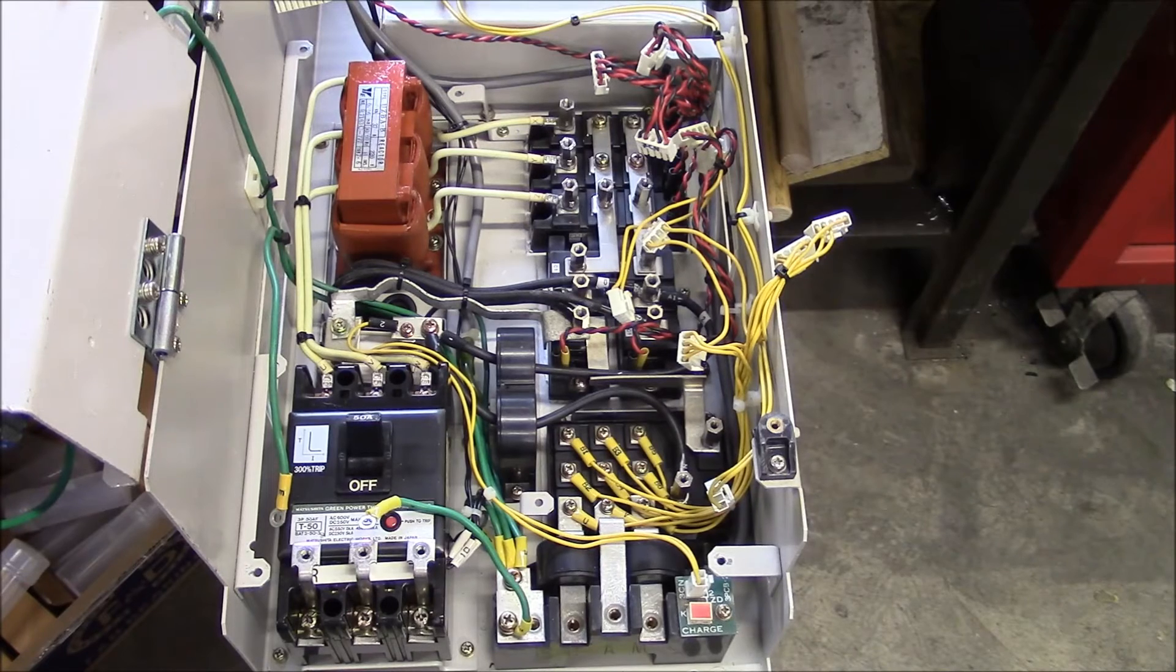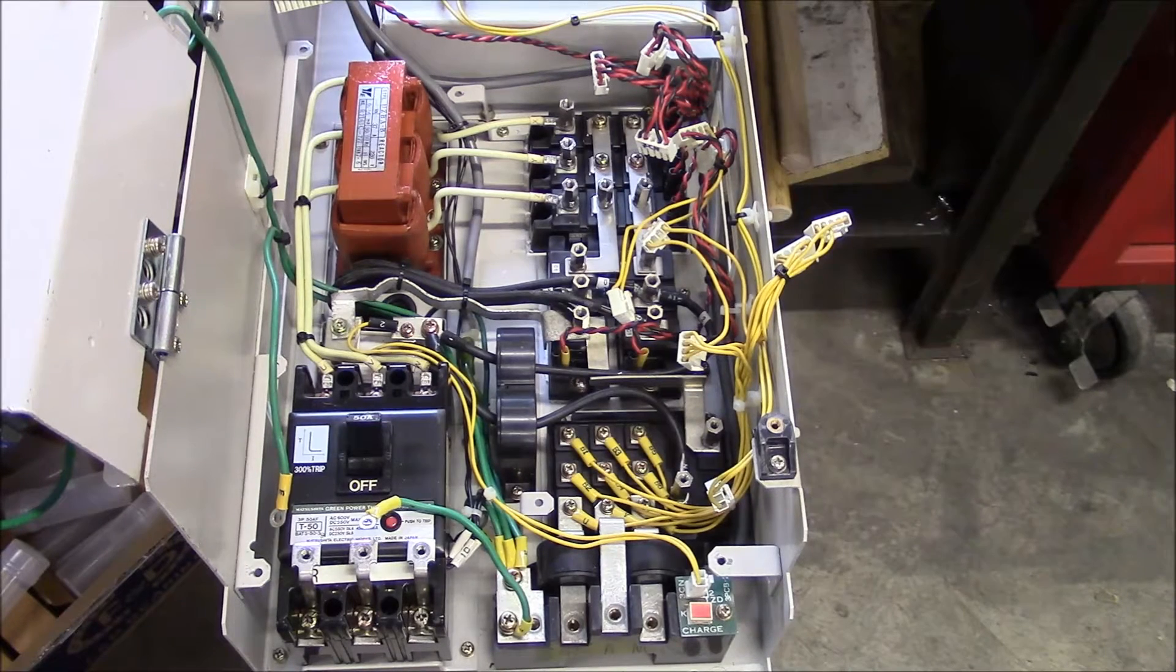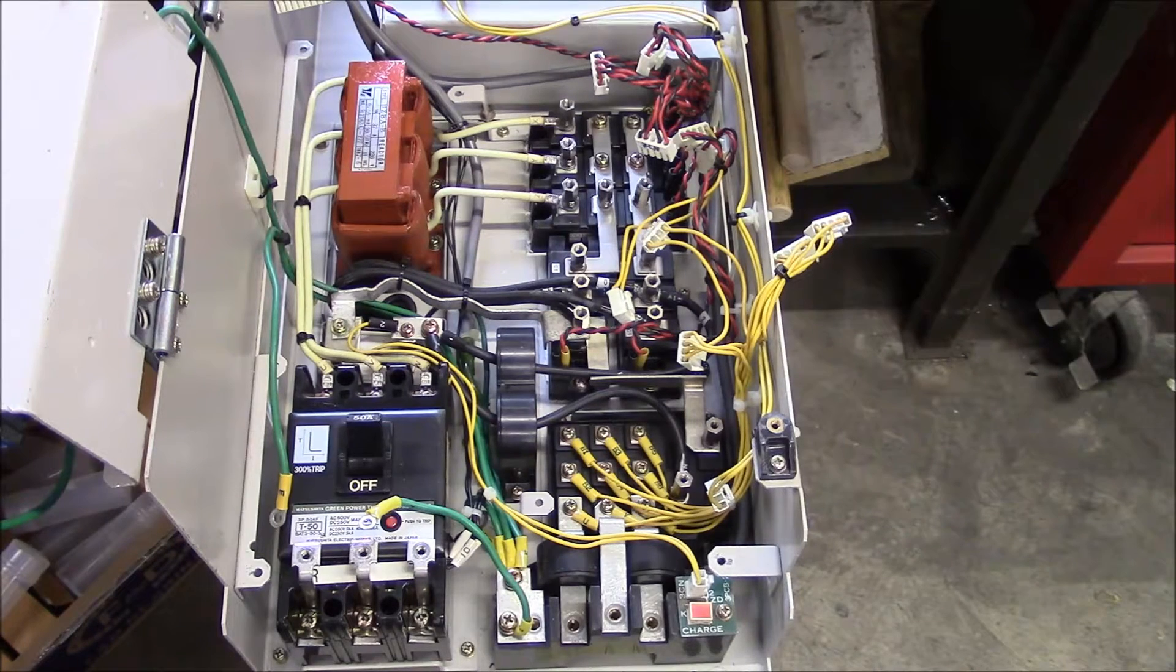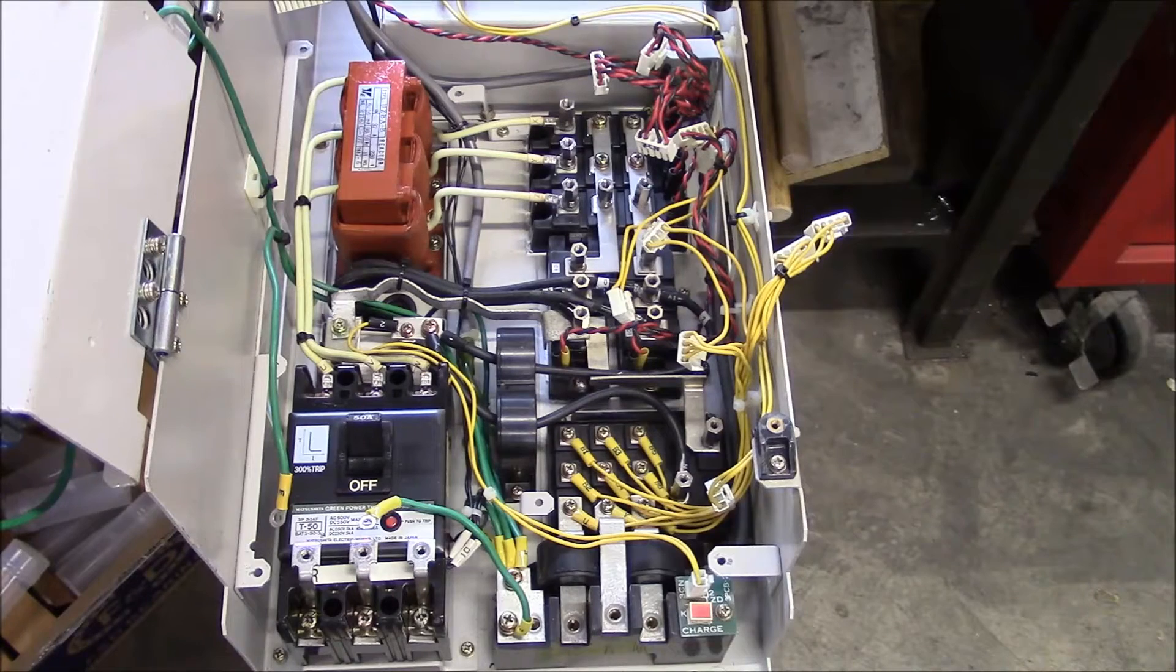This is the inside of a Yaskawa CIMR MT3 7.5K spindle drive. So this is a 7.5 kilowatt spindle drive. It's from a Moriseki SL20 CNC lathe.